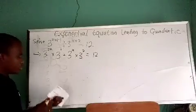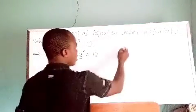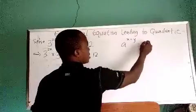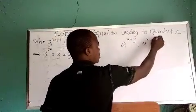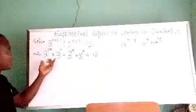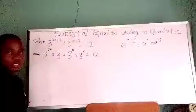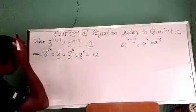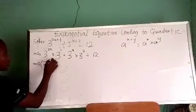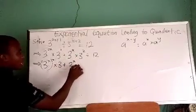We don't have a problem here because from the multiplication law of indices, if you have a raised to the power (x + y), it is the same as a to the power x multiplied by a to the power y. This is the idea we adopt here to separate each term. So the equation becomes (3^x)² multiplied by 3, plus 3 to the power x multiplied by 9, equals 12.